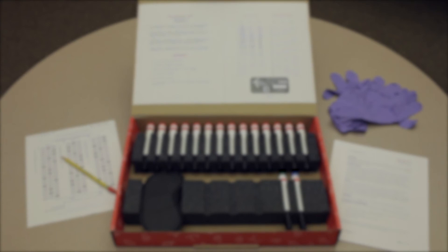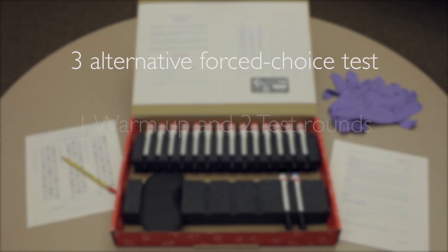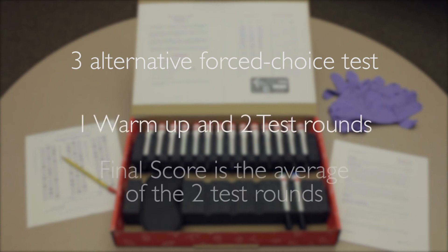The odor sensitivity test kit is a three-alternative forced choice test to estimate an individual's threshold to the test odorant n-butanol. The test procedure involves presenting two test rounds after a warm-up series. The final result is the average of the two rounds of testing. We recommend that first-time users be tested three times to establish a baseline. Also, individuals should be retested periodically to monitor their sensitivity.